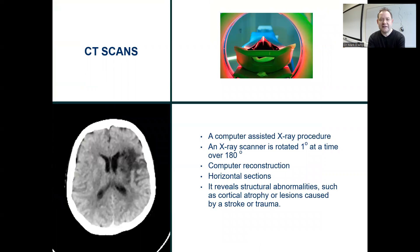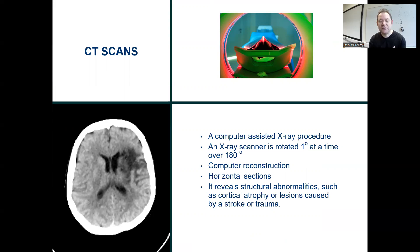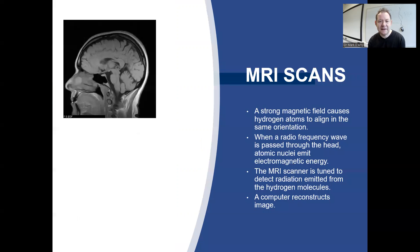CT scans are a computer-assisted X-ray procedure. An X-ray scanner is rotated about one degree at a time over 180 degrees. The computer then reconstructs that data into an image, providing data in horizontal sections of the brain. It can reveal structural abnormalities, such as cortical atrophy or lesions caused by a stroke or trauma. So a very useful technique.